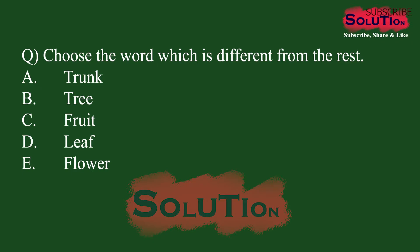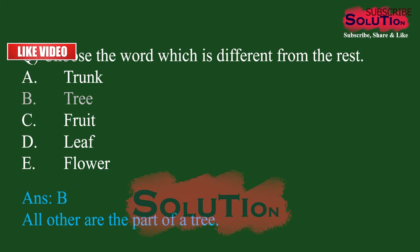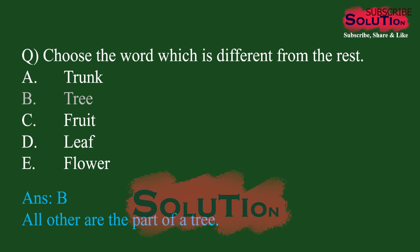Similarly, here we have another group of words and one word must be different. All the other words — trunk, fruit, leaf, flower — are parts of a tree. So 'tree' is not in the group; it is the parent. Without a tree you cannot expect any of these parts, but a tree may not always have fruit, leaves, or flowers.